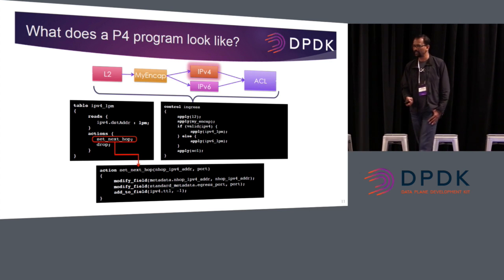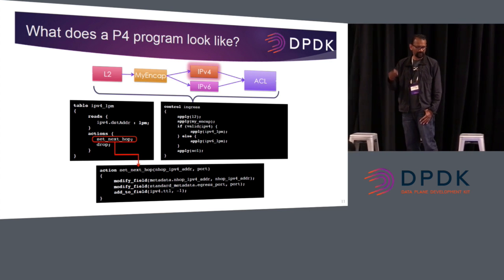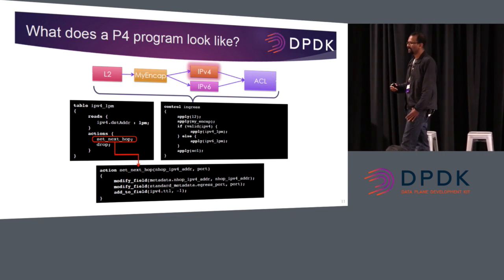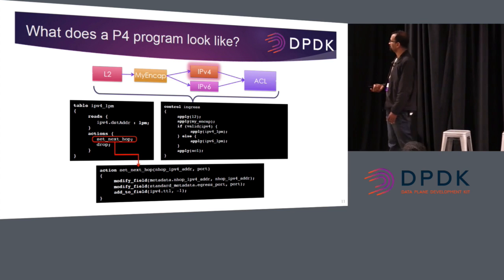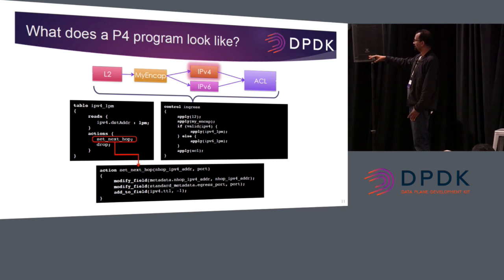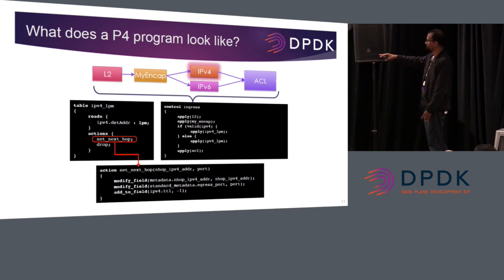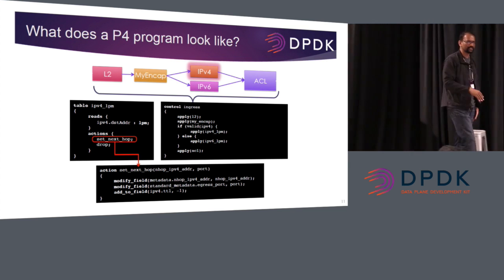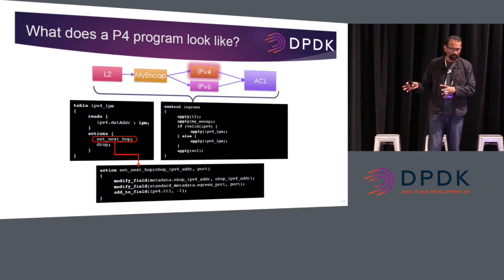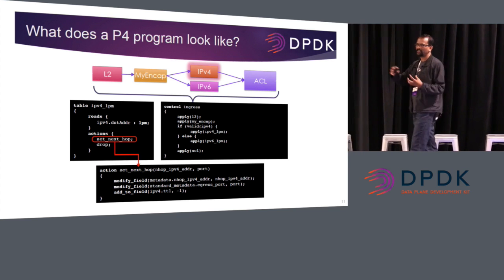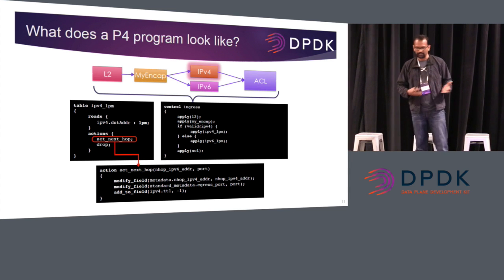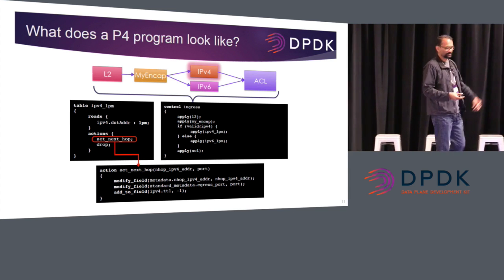There's a table code piece which describes an IP forwarding LPM table — it looks up using destination address and then sets the next hop. That's what IP processing is. The action defines what it does: it sets some metadata and decrements TTL. And then the control block stitches all the different processing tables together — L2, L3, ACLs, whatever you need.